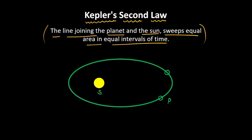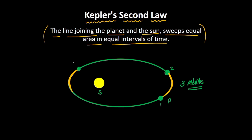Now, imagine that the planet is revolving at a constant speed. Let's say the planet goes from position 1 to position 2 in about 3 months, travelling a certain distance. If the speed of the planet were the same throughout, then in the same interval of time, the planet would also travel the same distance from position 3 to position 4.